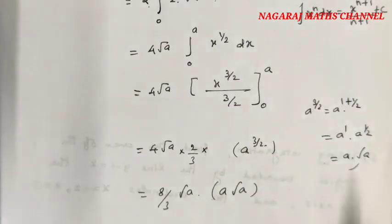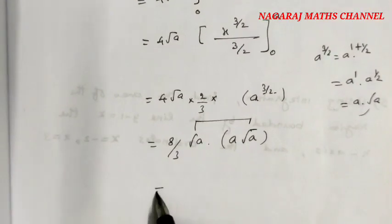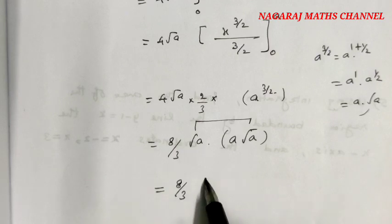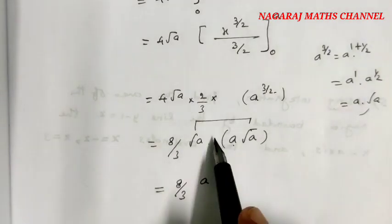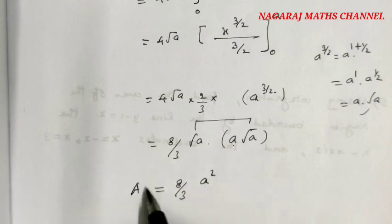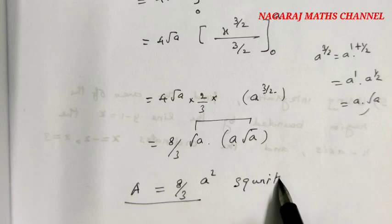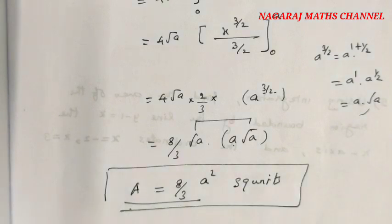So we have (4√a · 2/3) · a√a. This gives us (8/3) · √a · a · √a. Since √a times √a equals a, we get (8/3)a². This is the area in square units. This is the answer.